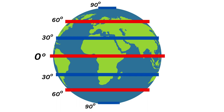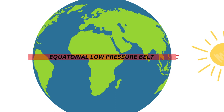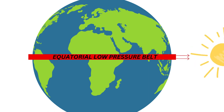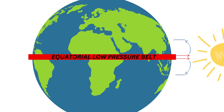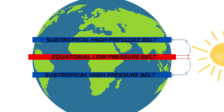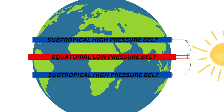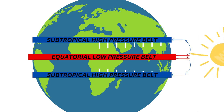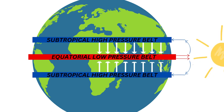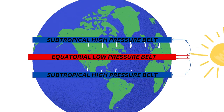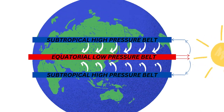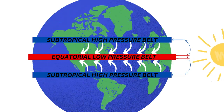The reasons are the pressure belts and the Coriolis effect. As the equator is closest to the sun, it heats up first, which creates an equatorial low pressure belt. The air rises, cools down, and sinks back to earth at 30 degrees south and 30 degrees north from the equator, creating subtropical high pressure belts. If the earth did not rotate, the wind would blow straight. But because the earth rotates, this creates the Coriolis effect, so the wind curves.